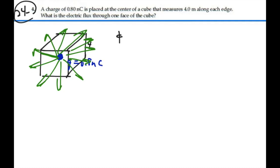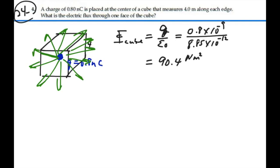The total flux through this cube is going to be equal to the charge enclosed over epsilon-not. And that's going to be equal to 0.8 nC over epsilon-not, which is 8.85 times 10 to the minus 12. And this will give us the electric flux, which is 90.4 Nm squared per coulomb.